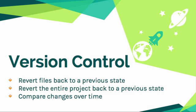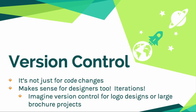We use version control to revert files back to a previous state, to revert an entire project back to a previous state, and also to compare changes over time. And it's not just for code changes, although the majority of what you'll find on GitHub is code, but it can also make sense for designers too.